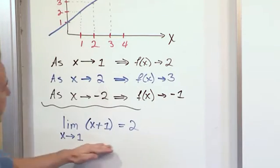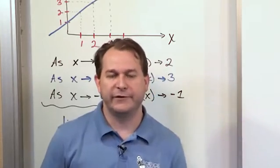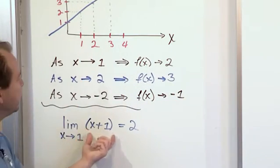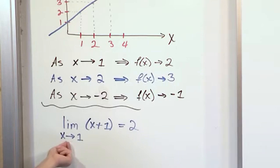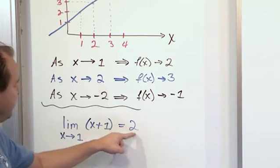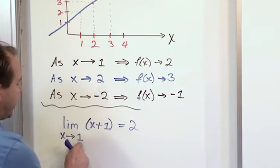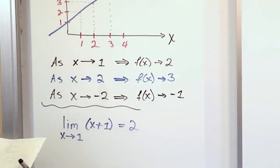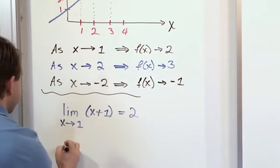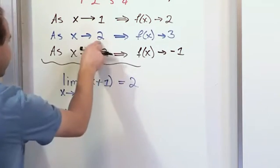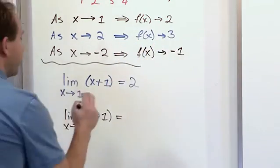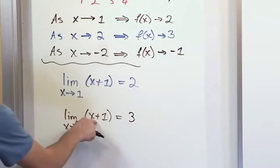If you can understand what I'm implying when I write that down, you're already 99% of the way to understanding limits. All it's saying is: here's a function, as x approaches 1 (never really getting to 1), if x gets infinitely close to 1, then this function is going to approach 2. Practically speaking, you take the number and plug it in. The second example: the limit as x approaches 2 of x + 1 equals 3 — again, 2 + 1 = 3.